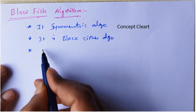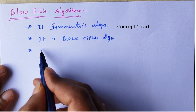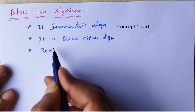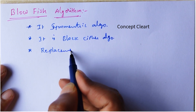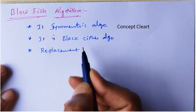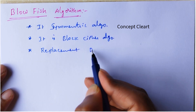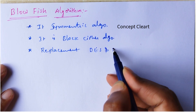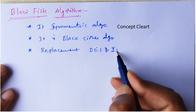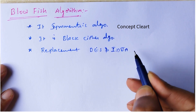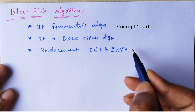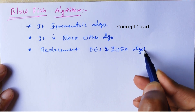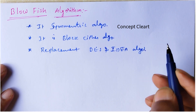Blowfish is a replacement of DES and IDEA. What are the drawbacks in the DES algorithm and IDEA algorithm? Those problems are overcome in the Blowfish algorithm. This is the replacement of these two algorithms.